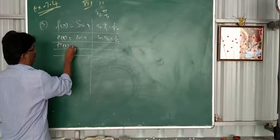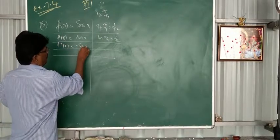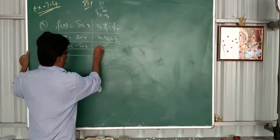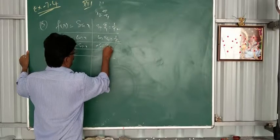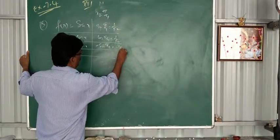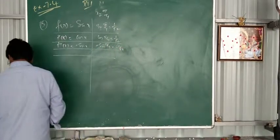Next f double dash of x, cos x, just minus sin x. So minus sin pi by 4, minus 1 by root 2. So you got the 3 answers now.